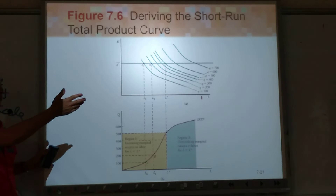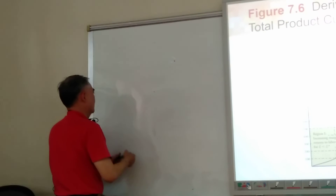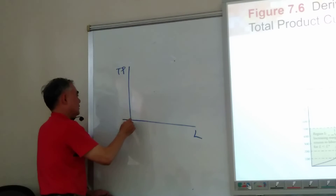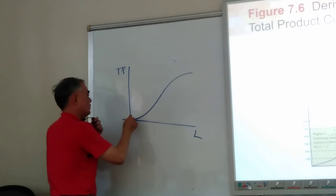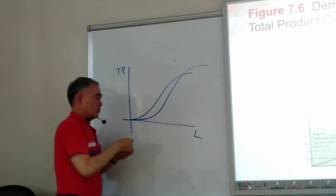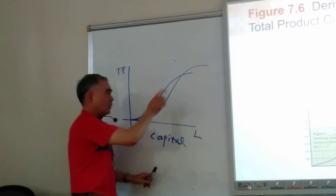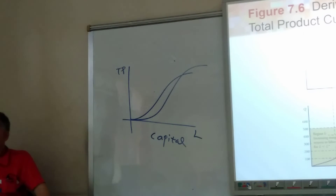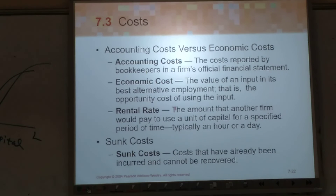This is the total production curve; we can use the average production curve. Here is L, and here is total product. If you project for the long term, you can trace curves at each different level of capital, and at each different level of capital you can figure out what's going on with the total production curve.